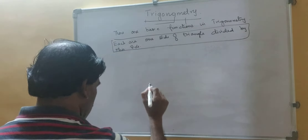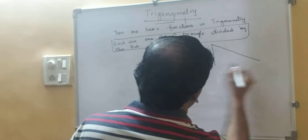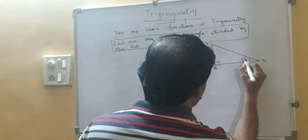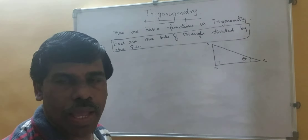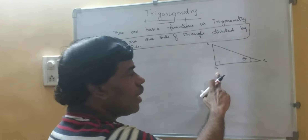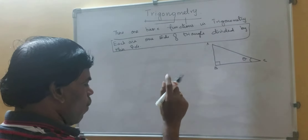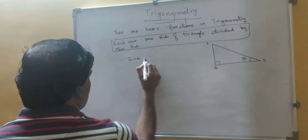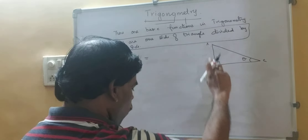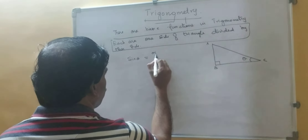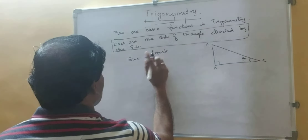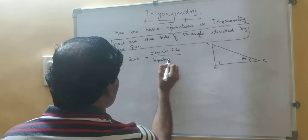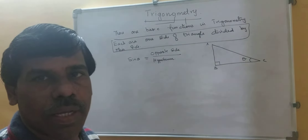In triangle ABC, angle B is 90 degrees and this angle is theta. We define the first basic function: sine theta equals opposite side upon hypotenuse. This is one trigonometrical ratio.